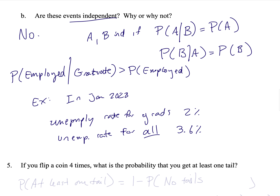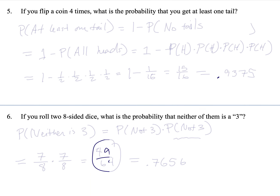If you flip a coin four times, what is the probability that you get at least one tail? One approach would be: P(one tail) + P(two tails) + P(three tails) + P(four tails) — that would work but take much more space. A better approach is to use the complement. This equals one minus the probability of the complement of that event. If we don't have at least one tail, we have zero tails — so this is one minus the probability of no tails, which equals one minus the probability of all heads.